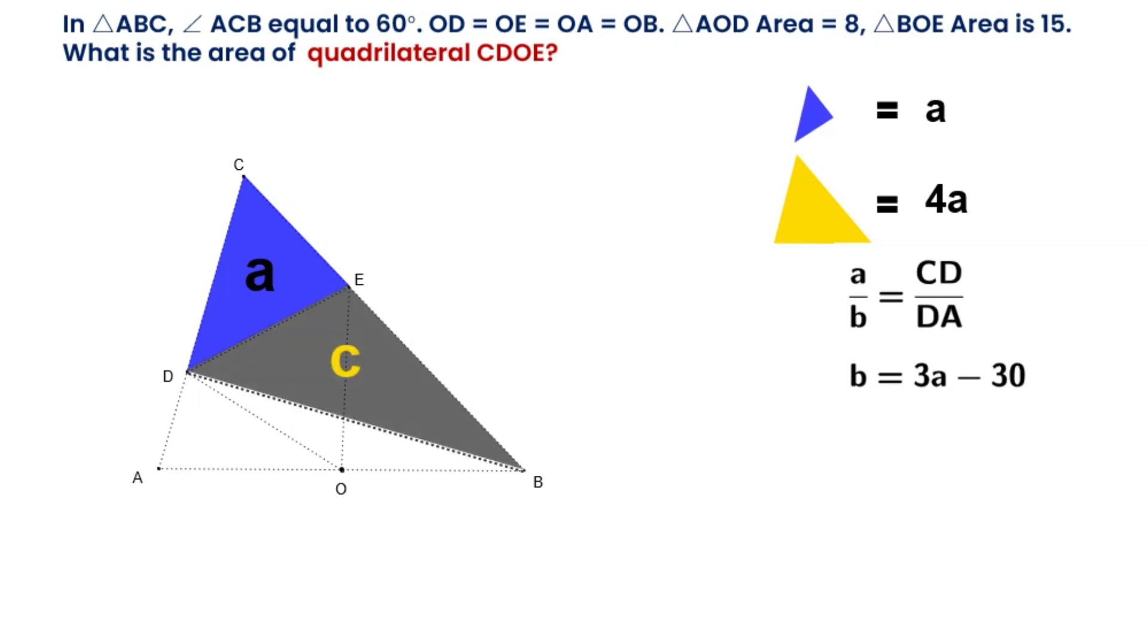Let's say the area of triangle BDE is equal to C. So A plus C over 16 is also equal to CD over DA. We also get C equals 3A minus 16. We get three equations for A, B and C.